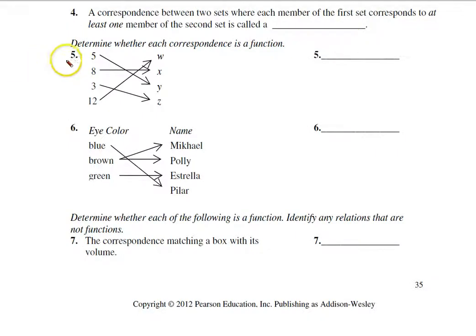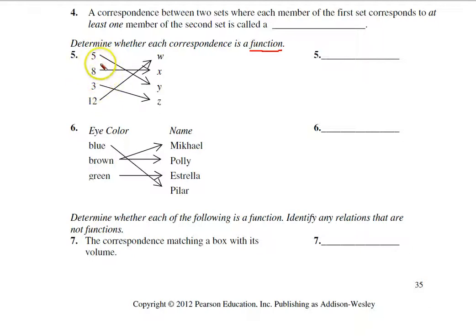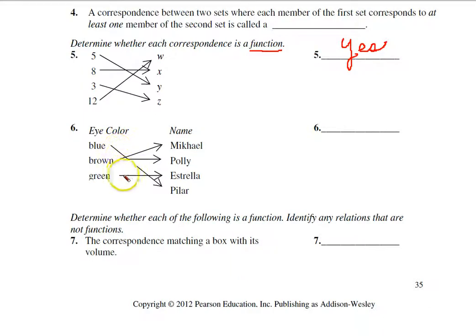In number five, we determine whether the diagram represents a function. We look at whether the X item — the first element — is used only once. The answer is yes, so this is a function. In the next example, can you see that 'brown' is used twice? So this is not a function.